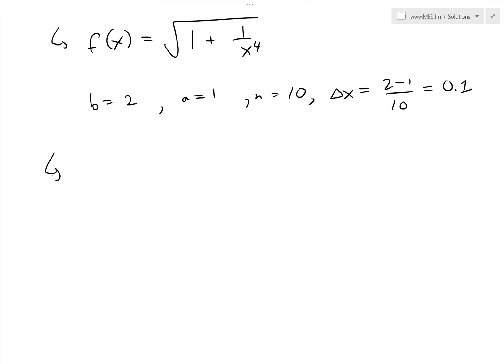So what we have now is L is roughly, or yeah L, the length is roughly equal to S_10, which equals to 0.1, which is delta x divided by 3. Then we have f(1). That's our x_0. And we keep adding 0.1 to it.